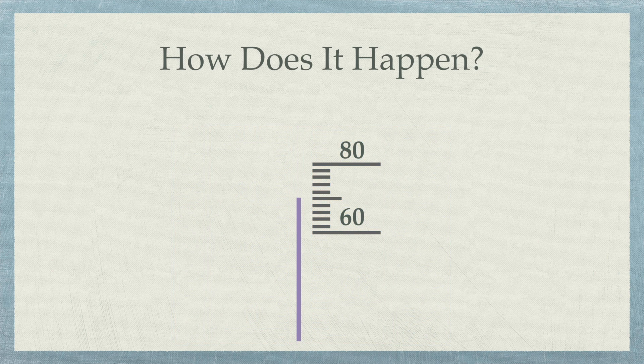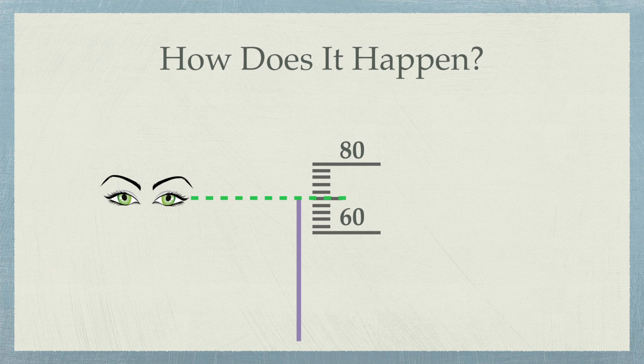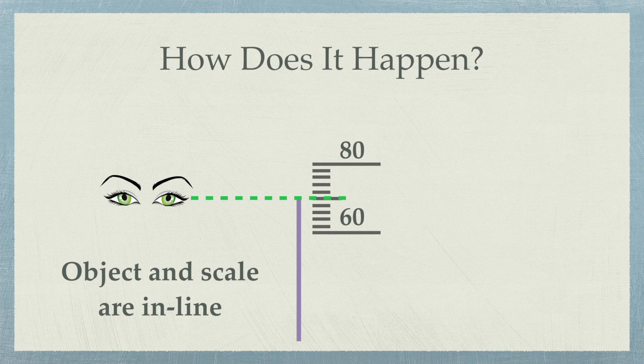When you look at eye level, the level of the object and the scale are on the same level, the same line. Hence, you read off the right value, which is 70 degrees.